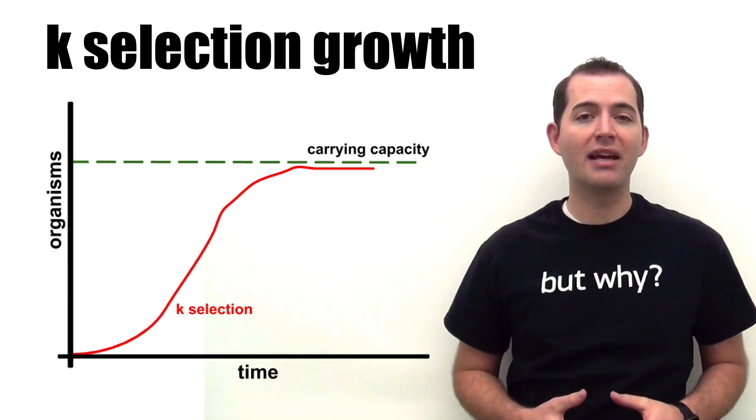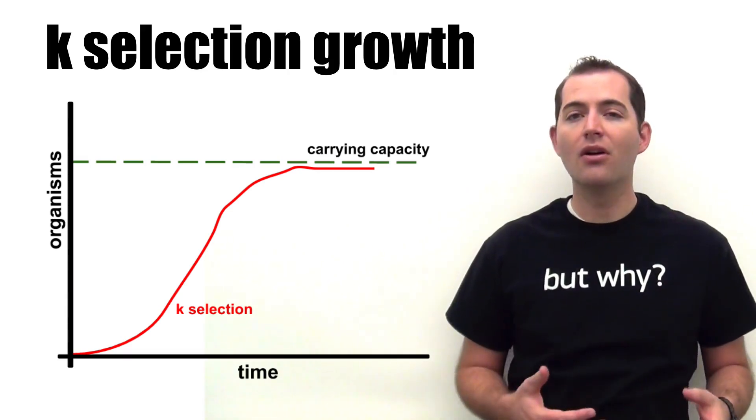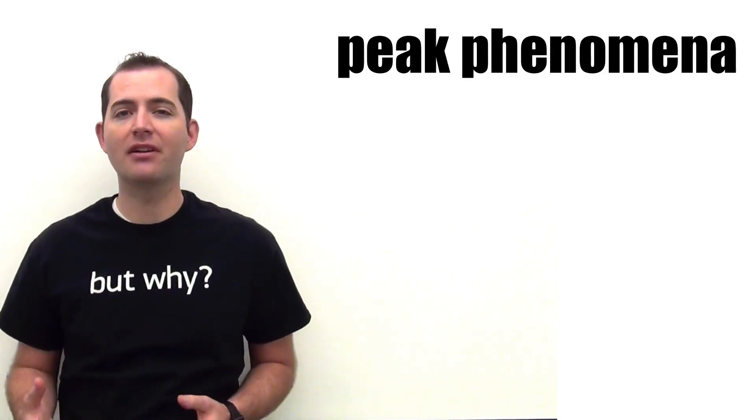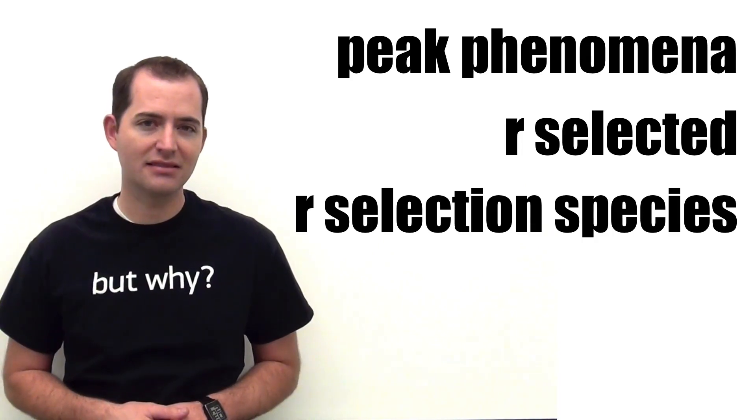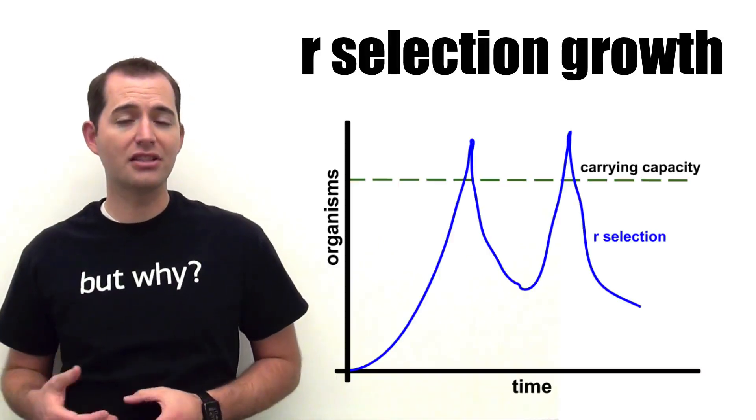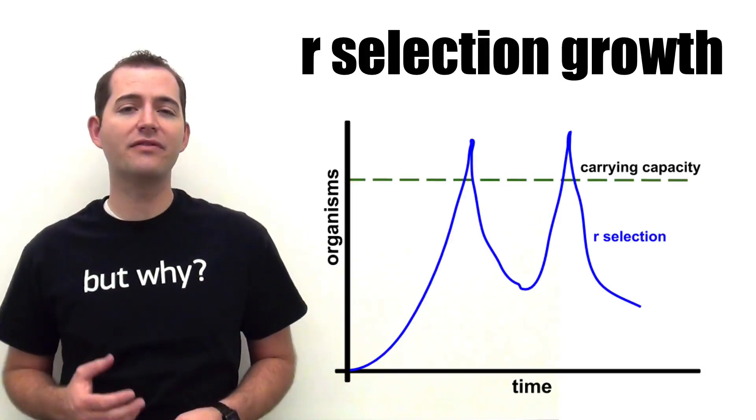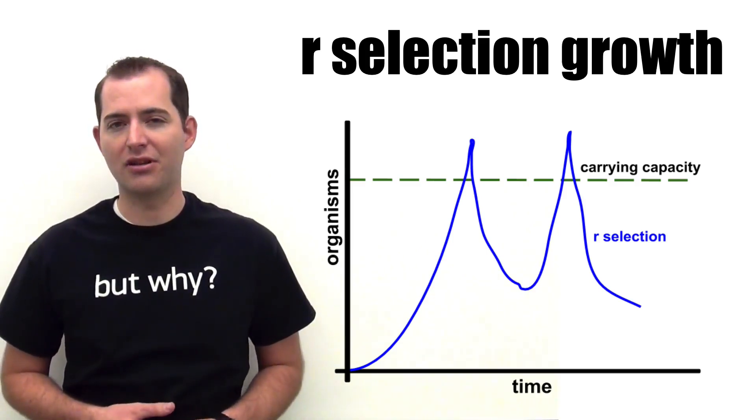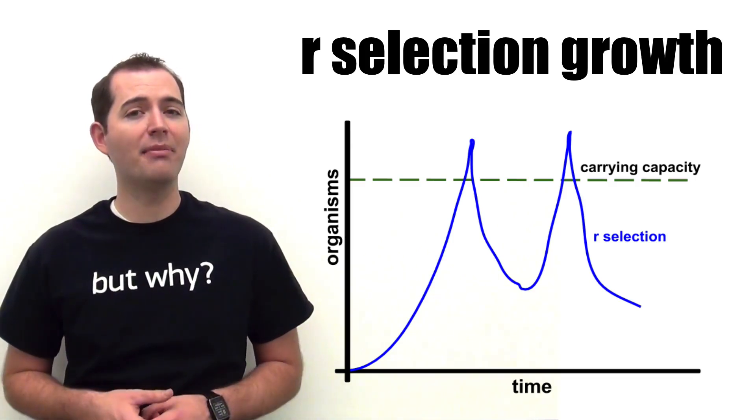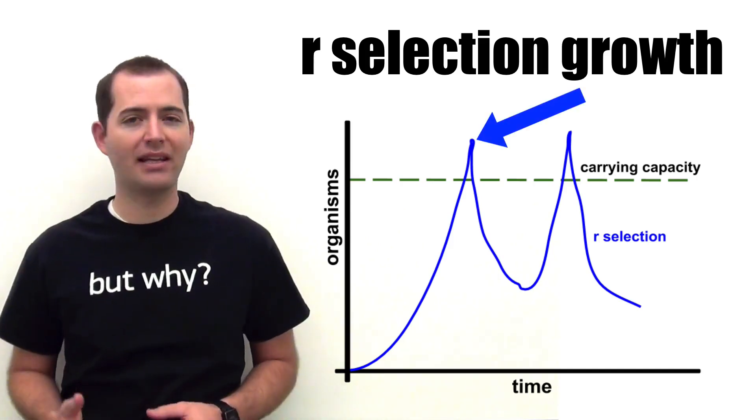These regulation factors make the population growth taper or even out. Populations that follow the pattern of peak phenomena are also known as R-selected or R-selection species. In R-selection growth, the same regulation factors don't come into play as happened in K-selection growth, and this causes the population to peak above the carrying capacity.